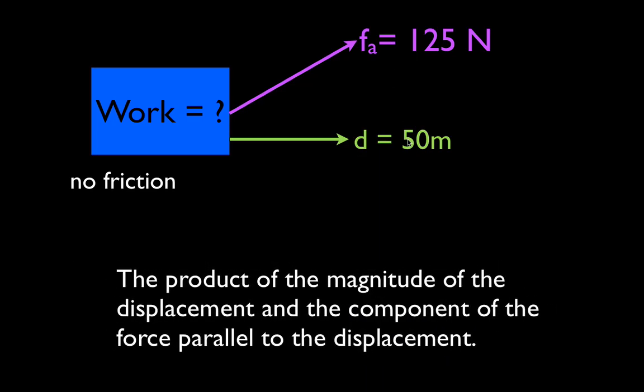Let's remember the definition of work. Work is the product of the magnitude of the displacement — that is simply the distance, and we're given the distance: 50 meters — and the component of the force parallel to the displacement. You'll notice this force is not parallel to the displacement, so we need to figure out what component of this force is parallel to the displacement, and we are going to do that using our trig functions.